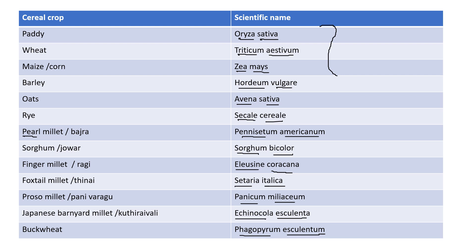All these crops come under the family Poaceae. However, buckwheat comes under the family Polygonaceae. It's important to know the scientific names. If you have any doubt, leave a comment in the comment section. Thank you.